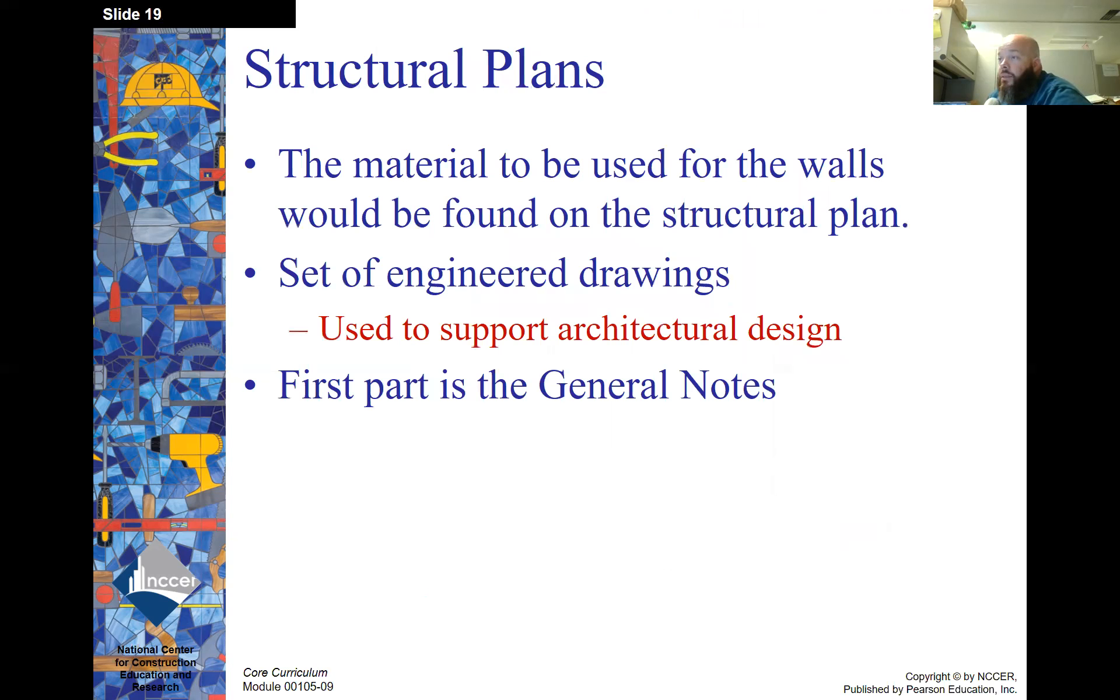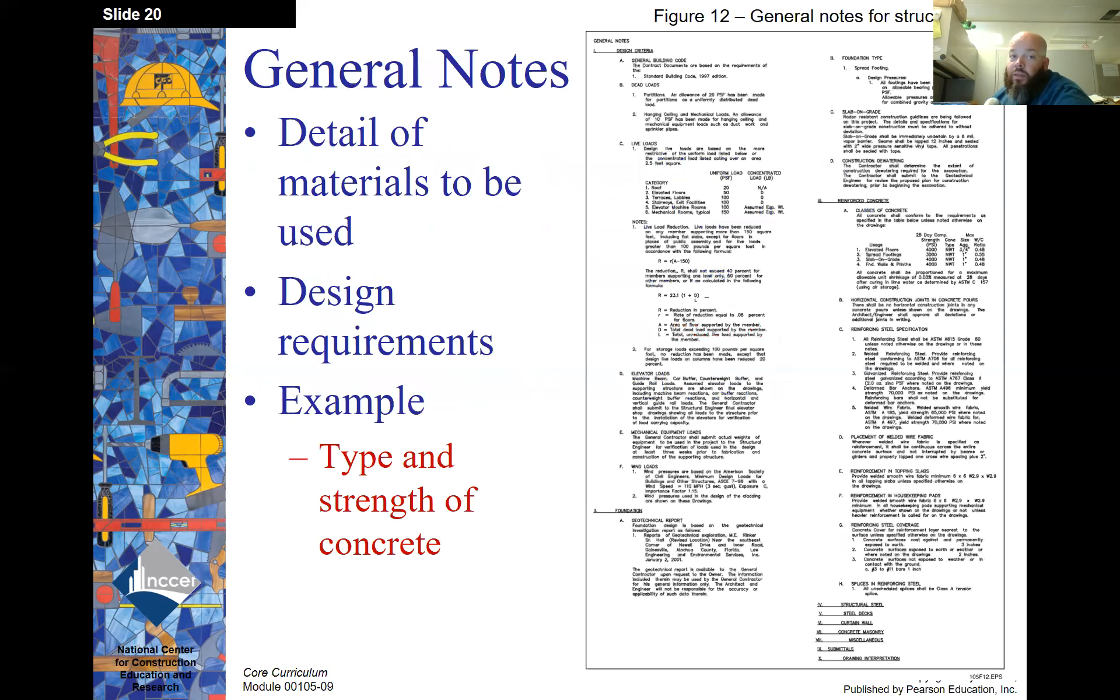Structural plans. The material to be used for the walls would be found on the structural plans. There are a set of engineering drawings and they're used to support the architectural design. And the first part is the general notes. The general notes, details of materials to be used, design requirements. Some examples are the type and strength of concrete. Here's an example of general notes on the right side of the slide.